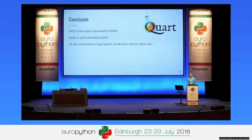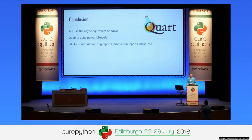Q: What about Sanic compared to Quart? It seems like a similar approach. A: Sanic is, in the ASGI sense, both the server and the framework — it does it all. It doesn't match the Flask API, just something similar, so you still have to learn a new API. Benchmark-wise, Sanic is much quicker than Quart even with UVcorn as your ASGI server.